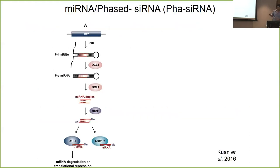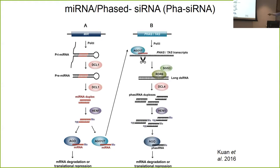Here I'm showing the biogenesis pathway for microRNAs. They are expressed from a gene, the transcript is processed by Dicer-like proteins into small RNAs, they are sorted and loaded into AGO-containing complexes, and these complexes are the effector molecules that lead to mRNA degradation or translational repression. In some cases, the microRNA will target a transcript, and instead of leading to cleavage, it leads to the production of double-stranded RNA that is then cleaved by Dicer-like proteins to produce phasiRNAs.